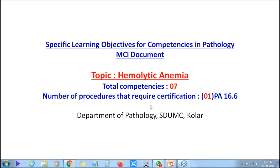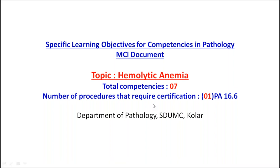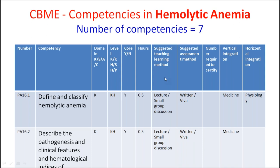There is one procedure that requires certification, which is on competency 16.6. Of the seven competencies, the first one is to define and classify hemolytic anemias. The second is to describe the pathogenesis and clinical features and hematological indices of hemolytic anemias. These can be covered in a lecture, and I would like to integrate this with medicine and physiology.